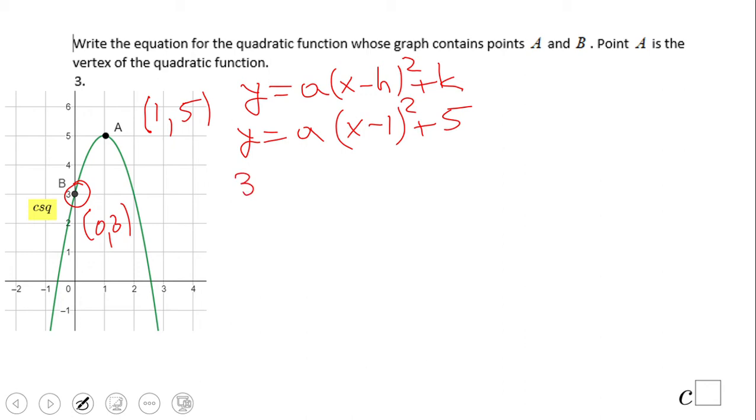Again, we're going to plug 3 for y and 0 for x, and we're going to go from there. 3 equals a times (0 - 1)² + 5. So 3 equals a (negative 1 squared is 1) plus 5. We subtract 5.